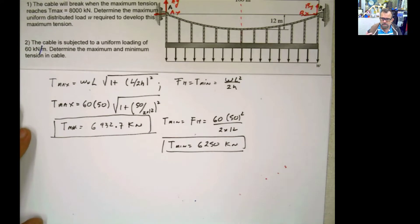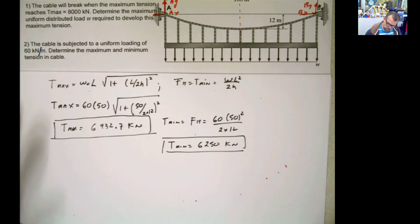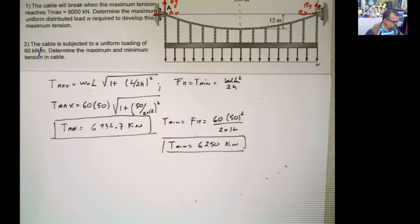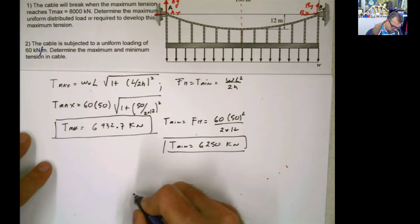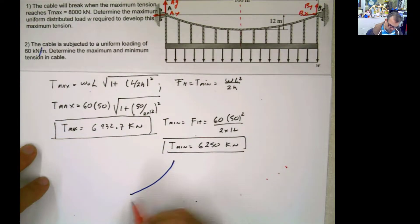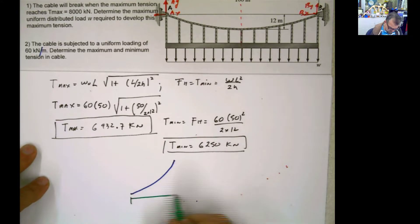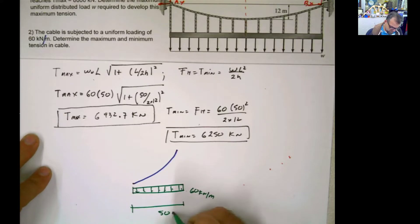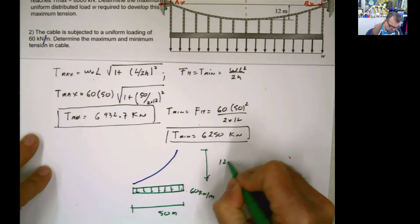Done. Problem solved. Now, if you don't have the formulas, you don't remember them — good old statics. So you go to statics and do the same thing we did before. You get the cable. This is the cable with a distributed load of 60 kilonewton per meter. L is 50 meters, and the sag is 12 meters.